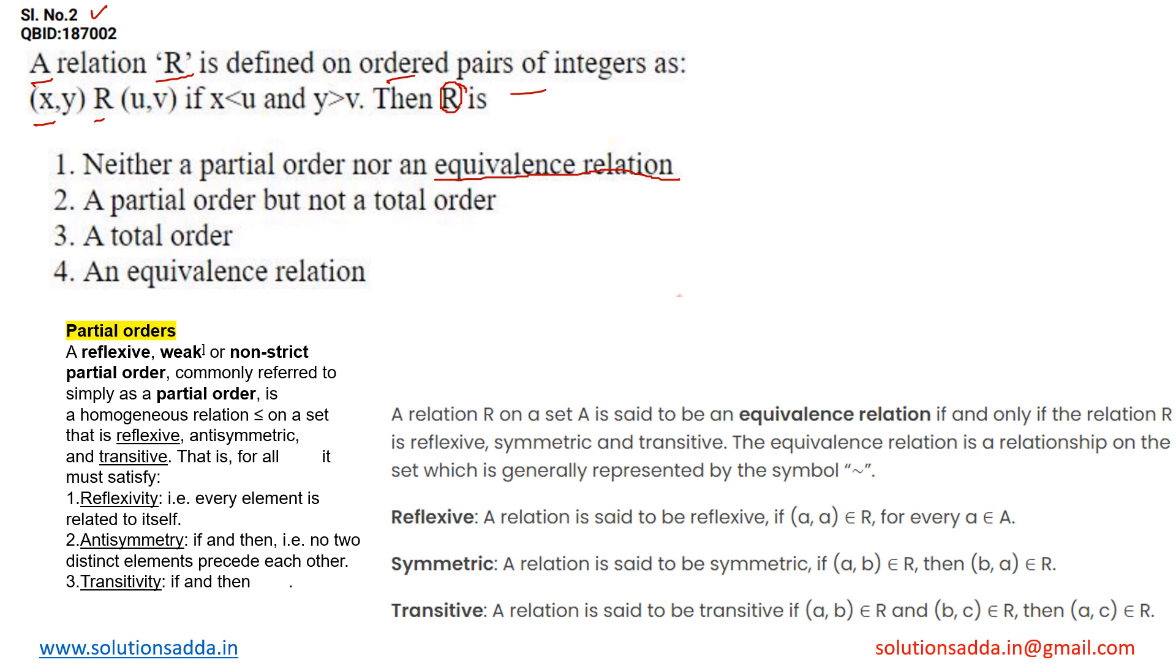What characteristics are contained by equivalence relations? There are three: reflexive, symmetric, and transitive. A relation R on a set A is said to be an equivalence relation when that relation satisfies these three properties.